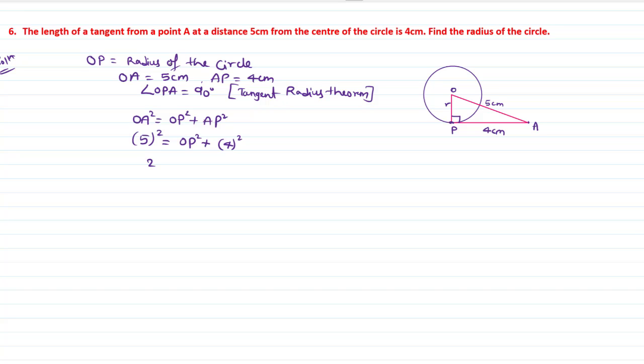5 square, its value is 25, is equals to OP square plus 4 square. Its value is 16. Transpose 16 to LHS part. 25 minus 16 which is equals to OP square.